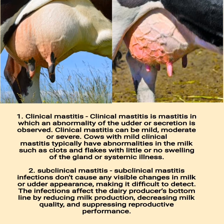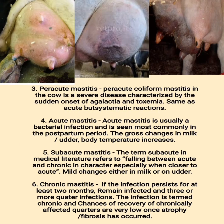(2) Subclinical mastitis infections don't cause any visible changes in milk or udder appearance, making it difficult to detect. The infections affect the dairy producer's bottom line by reducing milk production, decreasing milk quality, and suppressing reproductive performance.